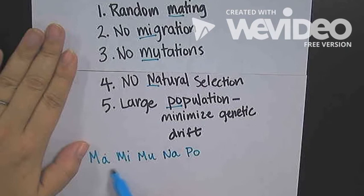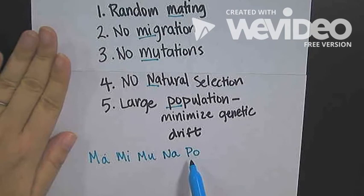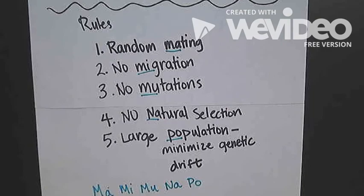Random mating, no migration, no mutations, no natural selection, and large population size. So that's the conceptual understanding of Hardy-Weinberg.